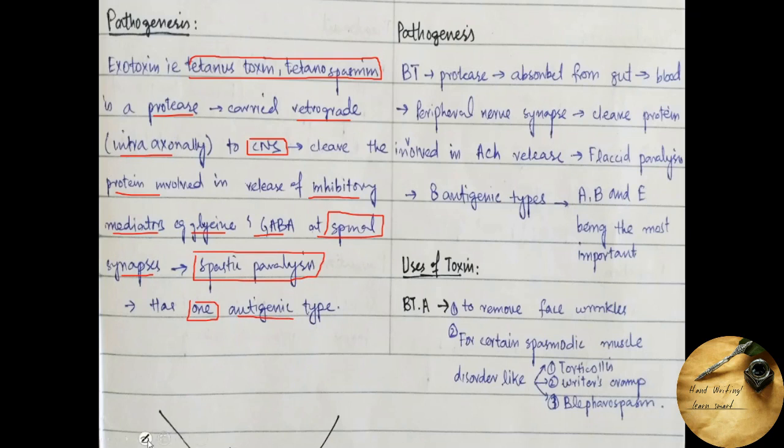Now coming towards the pathogenesis caused by Clostridium botulinum, the botulinum toxin is also a protease which is absorbed from gut, enters the blood, and reaches the peripheral nerve synapse where it cleaves the protein which is involved in acetylcholine release and thus prevents the release of acetylcholine, causing flaccid paralysis in contrast to Clostridium tetani which causes spastic paralysis.